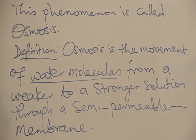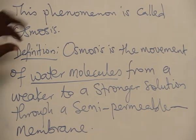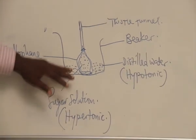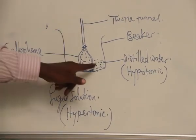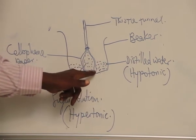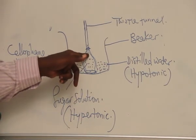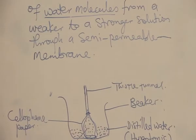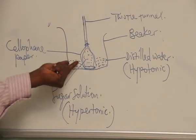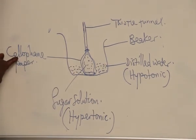In this diagram, osmosis is taking place here now. Water molecules are moving from the distilled water into a stronger solution, the sugar solution, through a semi-permeable membrane, which is the cellophane paper.